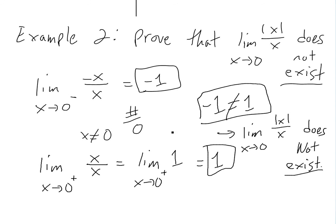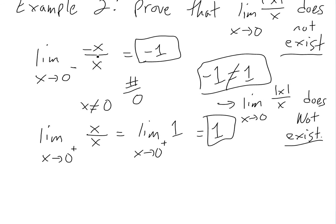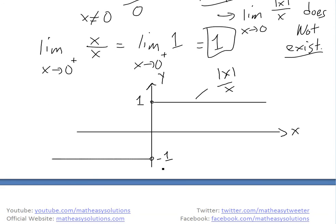If you graph it, it's easy to see: the x's always cancel, so on the negative side you always get negative one, and on the positive side you always get one. The graph of absolute value of x divided by x is just one when x is greater than zero and negative one when x is less than zero, with open circles at zero — so the limit is approaching from both sides but they don't meet.